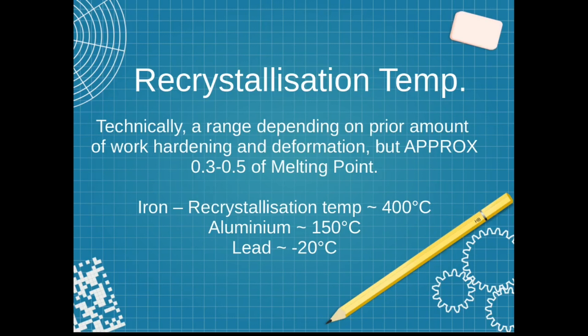Technically, it depends on the amount of prior work, how much they were deformed, and the original grain size, but it's approximately 40% of the absolute temperature of melting.